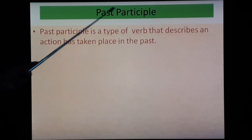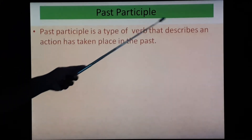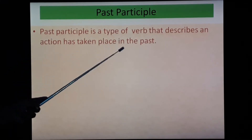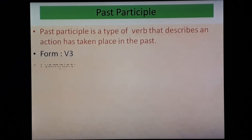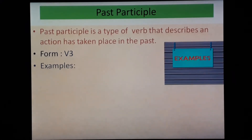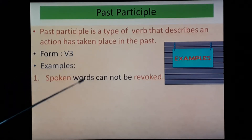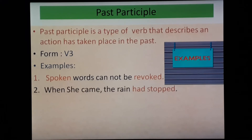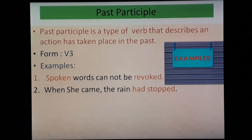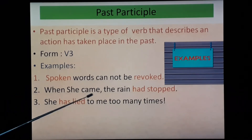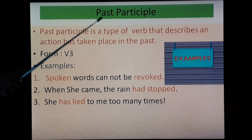Next we will see past participle. Past participle is a type of verb that describes an action that has taken place in the past. The structure is V3 form. Examples: 'Spoken words cannot be revoked' — 'spoken' is V3, past participle. 'When she came, the train had stopped' — 'had stopped' is past participle. 'She has lied to me too many times' — 'has lied' is past participle. How to use it is already shown in the series of tenses, so kindly watch all videos regarding tenses.